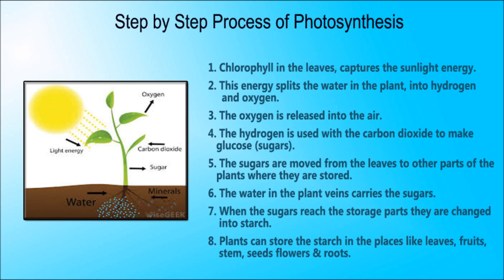The water in the plant veins carries the sugars. When the sugars reach the storage parts, they are changed into starch. Plants can store the starch in places like leaves, fruits, stems, seeds, flowers, and roots.